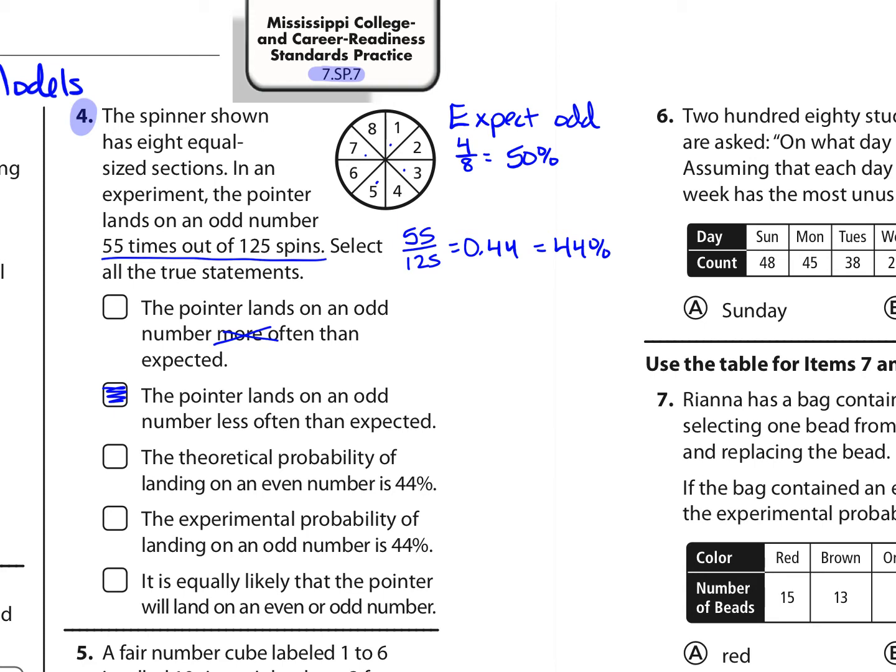The next one says the theoretical probability of landing on even is 44%, but in theory, the even number would be 50% because, once again, it'd be 4 out of 8. The experimental probability of landing on an odd number is 44%, we found that here, and then it's equally likely that the pointer will land on an even or odd number. That's true. It's not based on what experimentally happened. Just the next time the spinner is spun, there's a 1 out of 2 chance of landing on odd or landing on even. So there are equal chances.